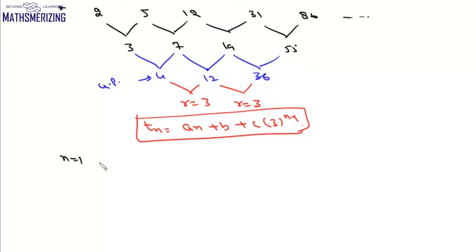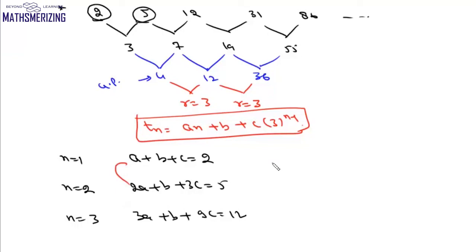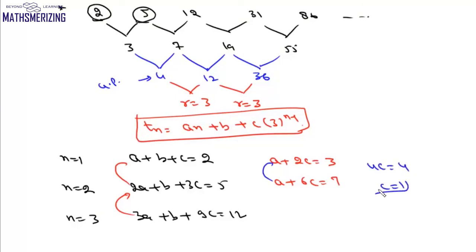Putting n = 1: a plus b plus c = 2. Putting n = 2: 2a plus b plus 3c = 5. Subtracting equations gives a plus 2c = 3, then a plus 6c = 7. Subtracting again: 4c = 4, so c = 1, a = 1, and b = 0.